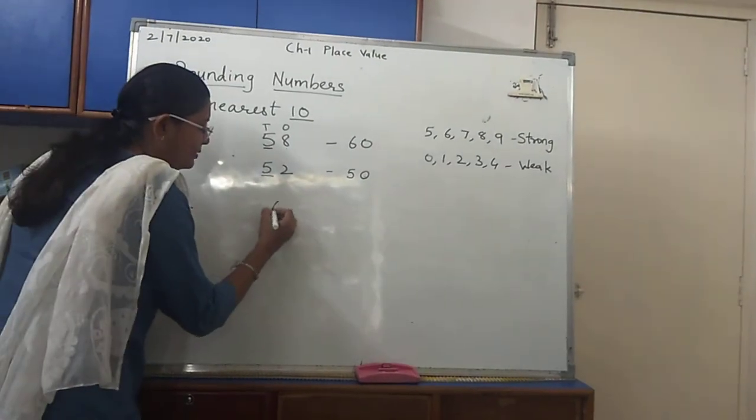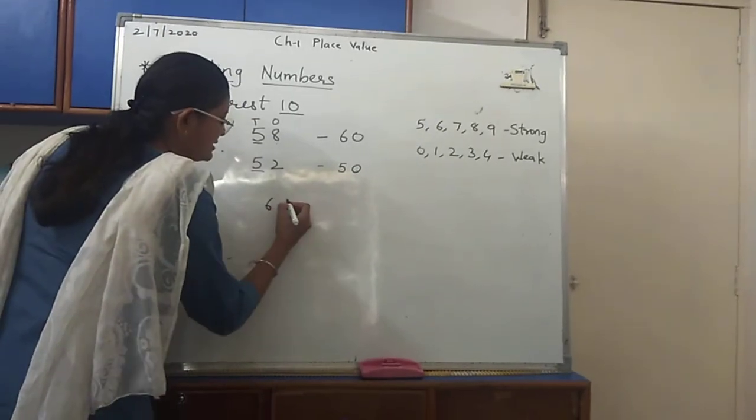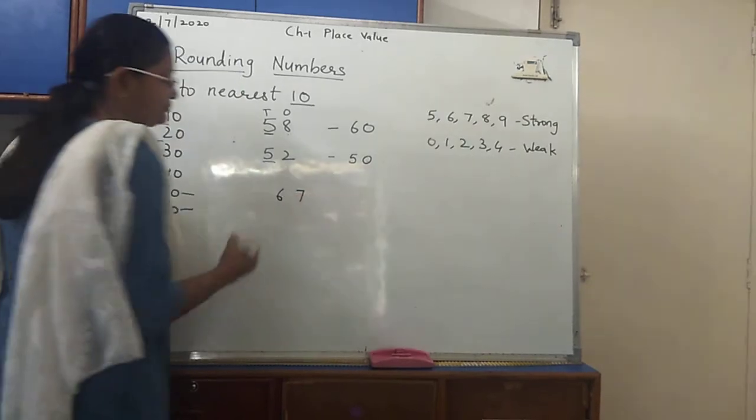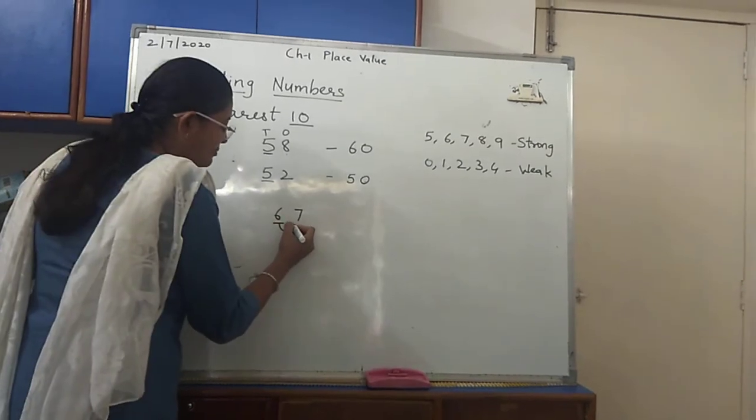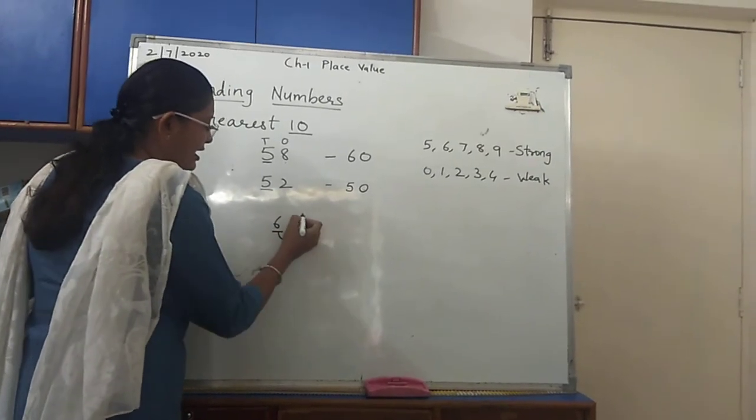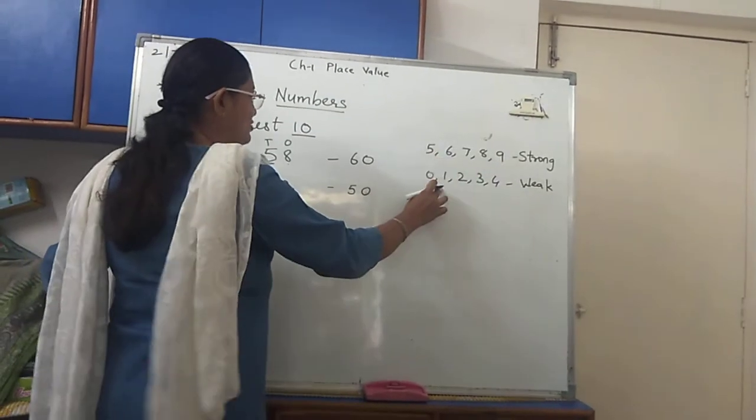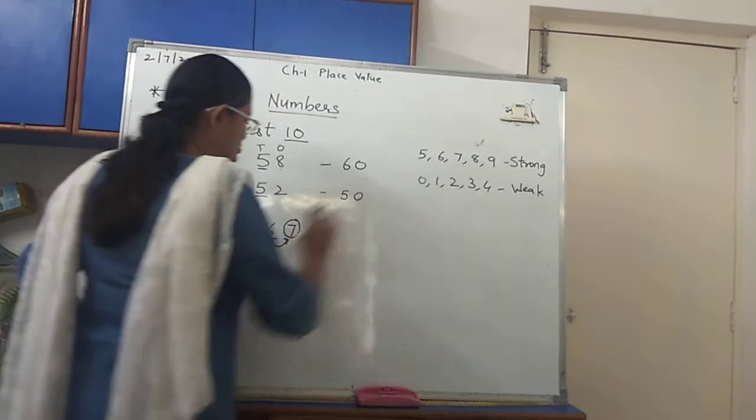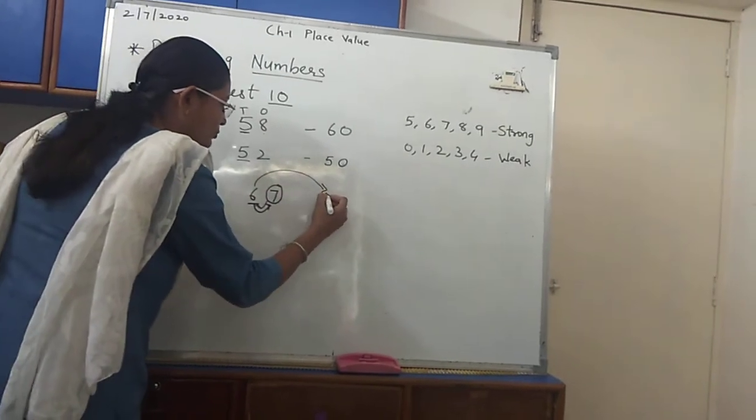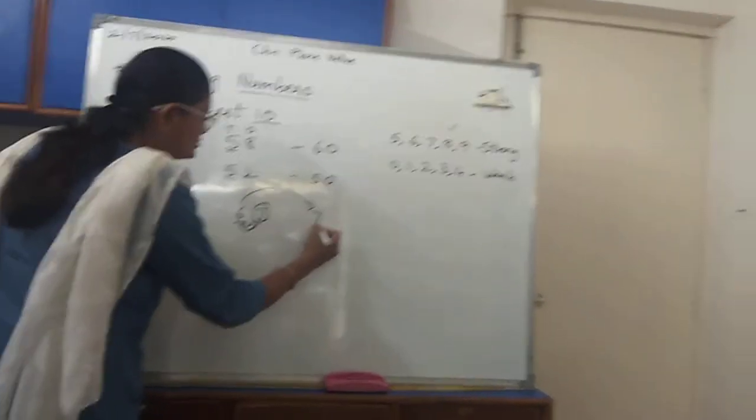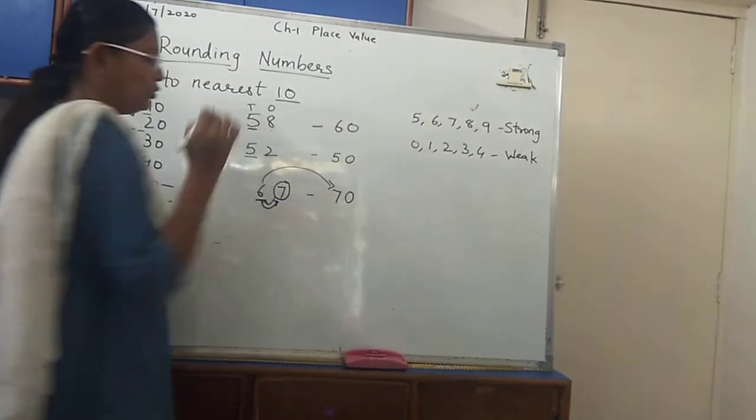Now let me give you one more example, 67. As we are talking about 10s, at 10s place 6 is given. So move to the next number, that is 7, and circle it. Why you have circled it? To decide whether 7 is the strongest number or weak number. It is the strongest number, so it has power to push 6 to the next number. When you will push, it will go to 7. From 6, it will move to 7. And here it will remain 0. So 67 is rounded to 70.